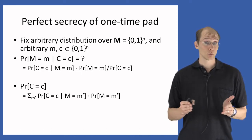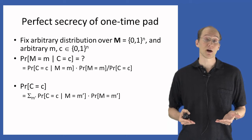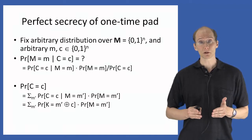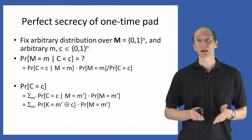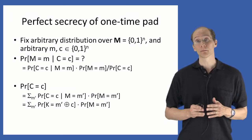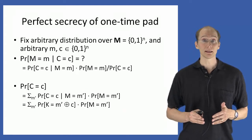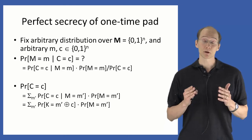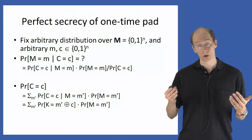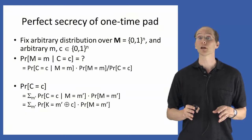The events m = m' partition the space, since the message must take on some value and the only possibilities are messages in the message space. We can rewrite the conditional probability as follows: the probability that the ciphertext equals c conditioned on the message being m' is exactly equal to the probability that the key K takes on the value m' XOR c. This is a crucial point and the first place in the proof where we rely on the specifics of the one-time pad scheme — everything up to now was generic.